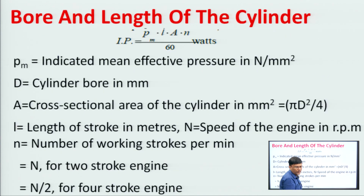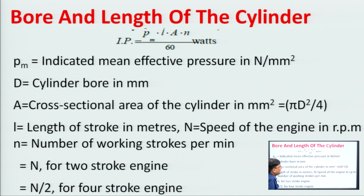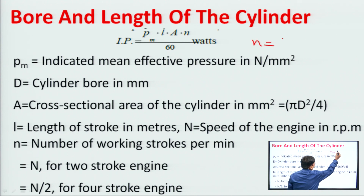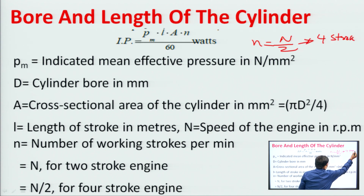There is another formula applicable for both 4-stroke and 2-stroke engines: Indicated power = PM × L × A × N / 60. Here PM is the mean effective pressure, L is the length of the stroke, A is the area, and N is the number of working strokes per minute. For a 2-stroke engine, N (working strokes per minute) equals the engine speed in RPM. For a 4-stroke engine, N equals (engine speed in RPM) / 2, since one power stroke occurs every two revolutions.